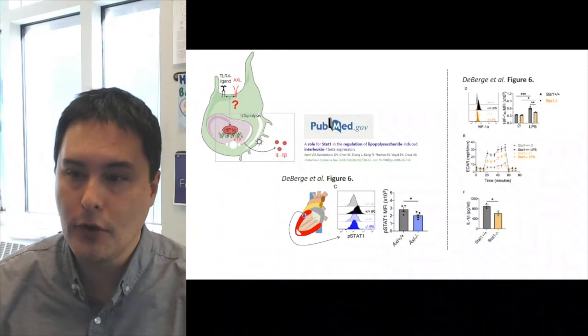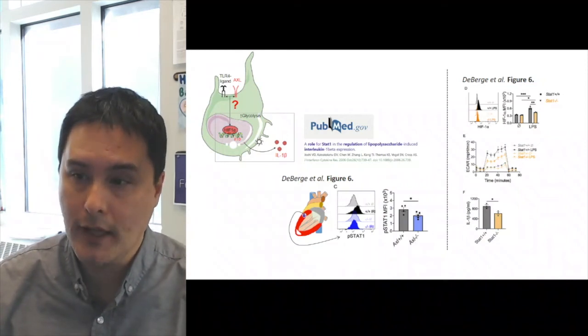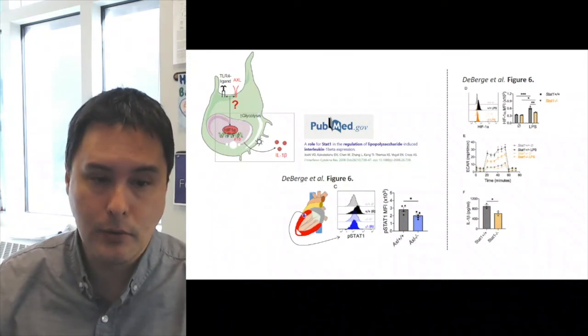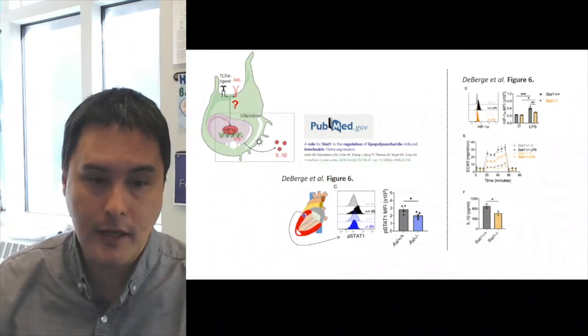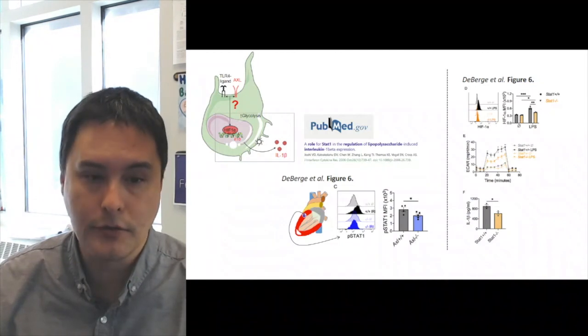And then in figure six he also showed that in macrophages that were lacking STAT-1, they also had reduced activation of HIF-1 alpha, reduced profile of acidification or glycolysis, and reduced production of IL-1 beta.